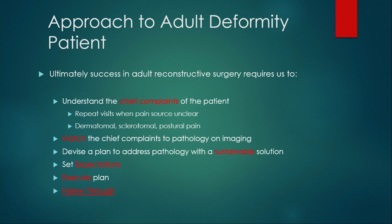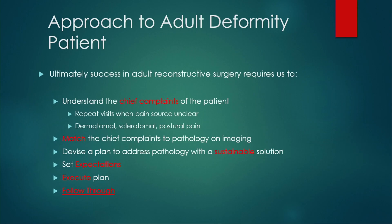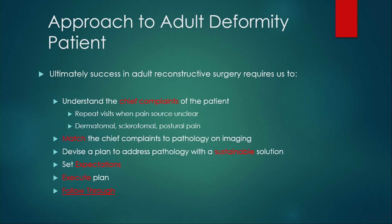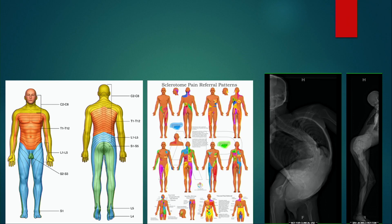In terms of the approach to the adult patient, it's critical to understand their chief complaint. When it's not clear what their most important pain generator is, see them again. Dermatomal, sclerotomal, and postural pain have to be distinguished. We must match the chief complaint to the pathology and imaging, then devise a plan to address that pathology with a sustainable solution. We have to set expectations — very few patients go from 10 out of 10 pain to 0 out of 10.